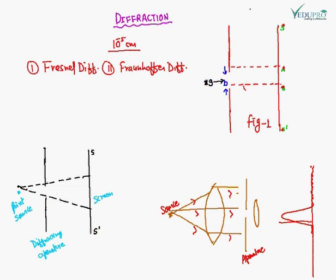In Fresnel diffraction, the source of light and the screen are at a finite distance from the obstacle — as shown in figure number 2. The distance between them is constant and finite; it cannot change. The wavefronts produced are cylindrical or spherical.